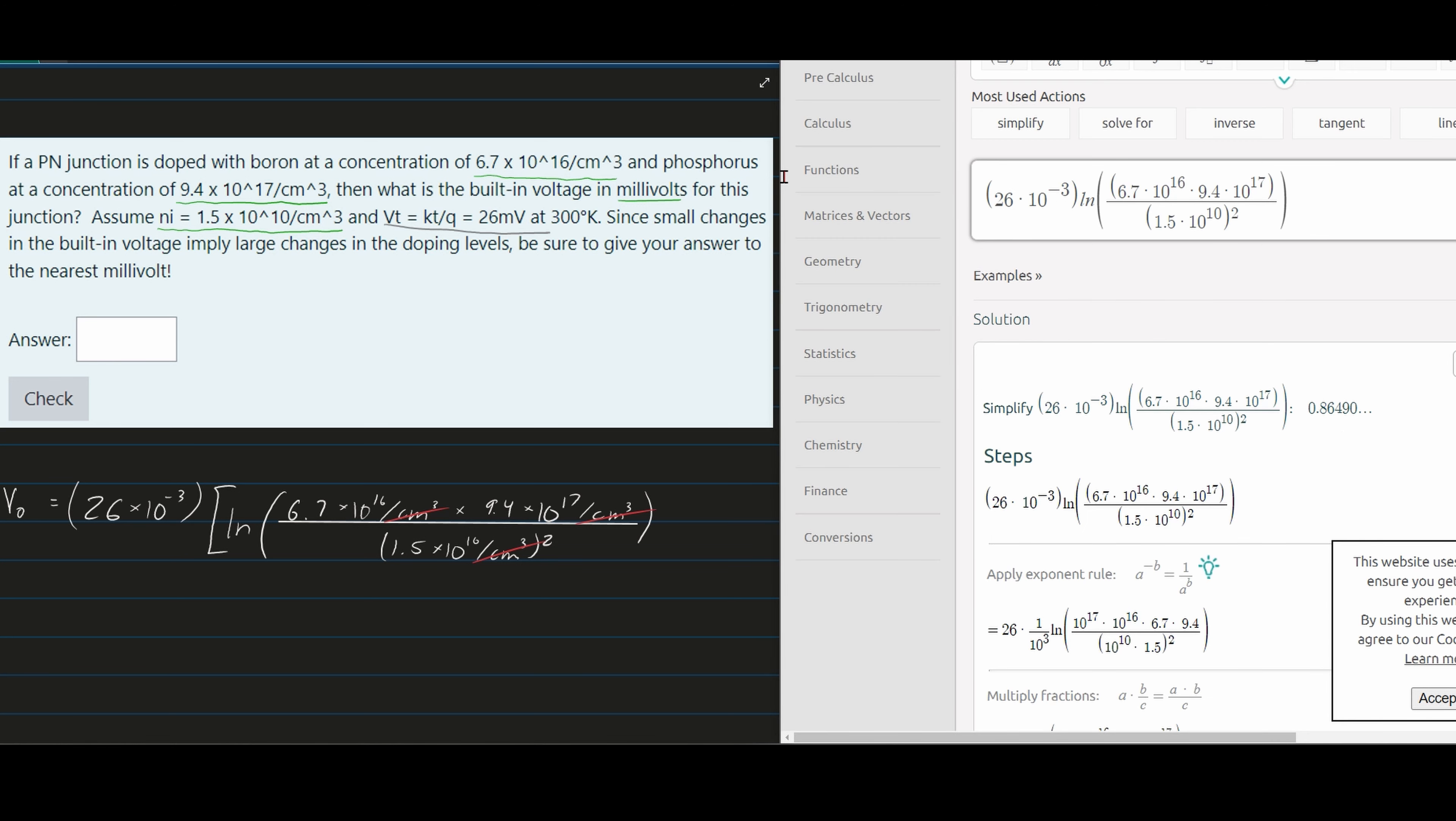We have 26×10⁻³ times the natural log of all the terms inside, which gives approximately 0.86490 volts.